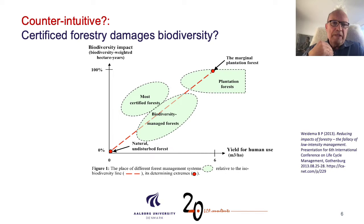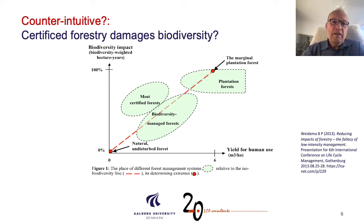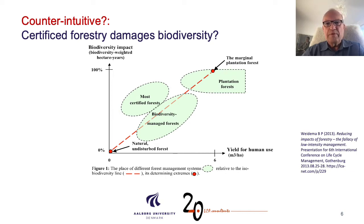The problem is that even if you do a little disturbance in a forest, it has a big biodiversity impact. When you have an already damaged forest and you increase the yield in that, the additional biodiversity impact is not that high. So the curve of normal forestry is lying above the red line. Most certified forests as well. A biodiversity-managed forest would have to be below the red line, and getting there requires very dedicated biodiversity management — and it's very difficult.